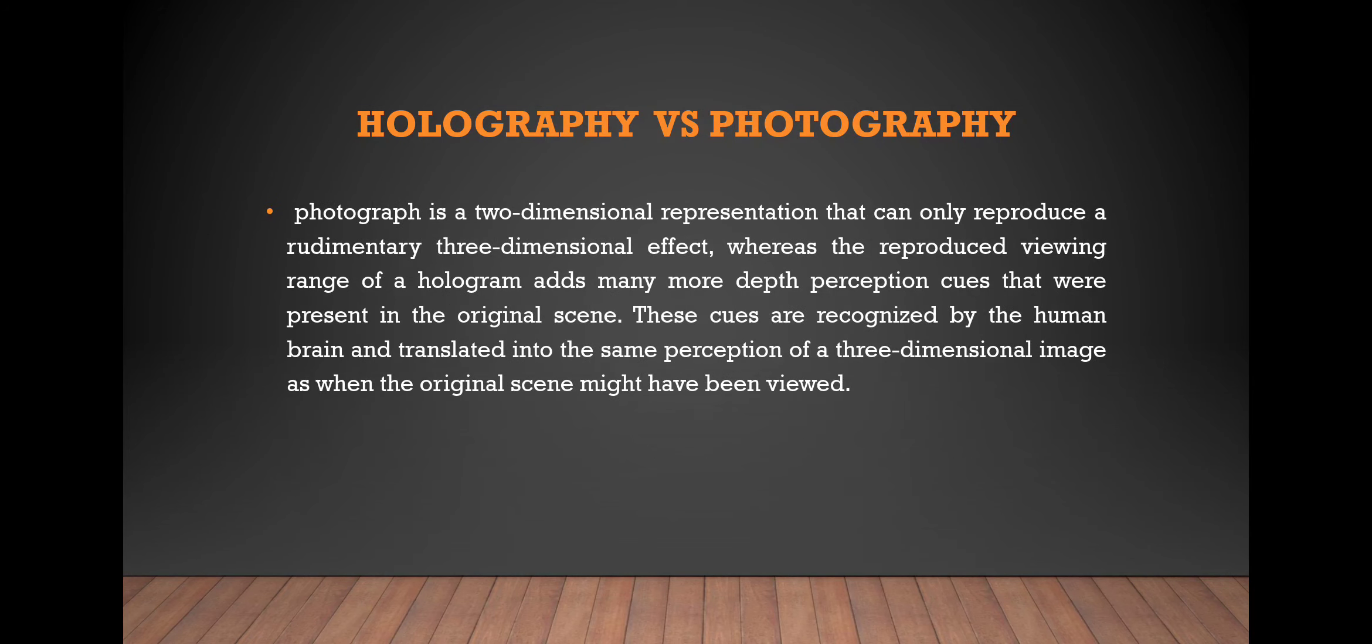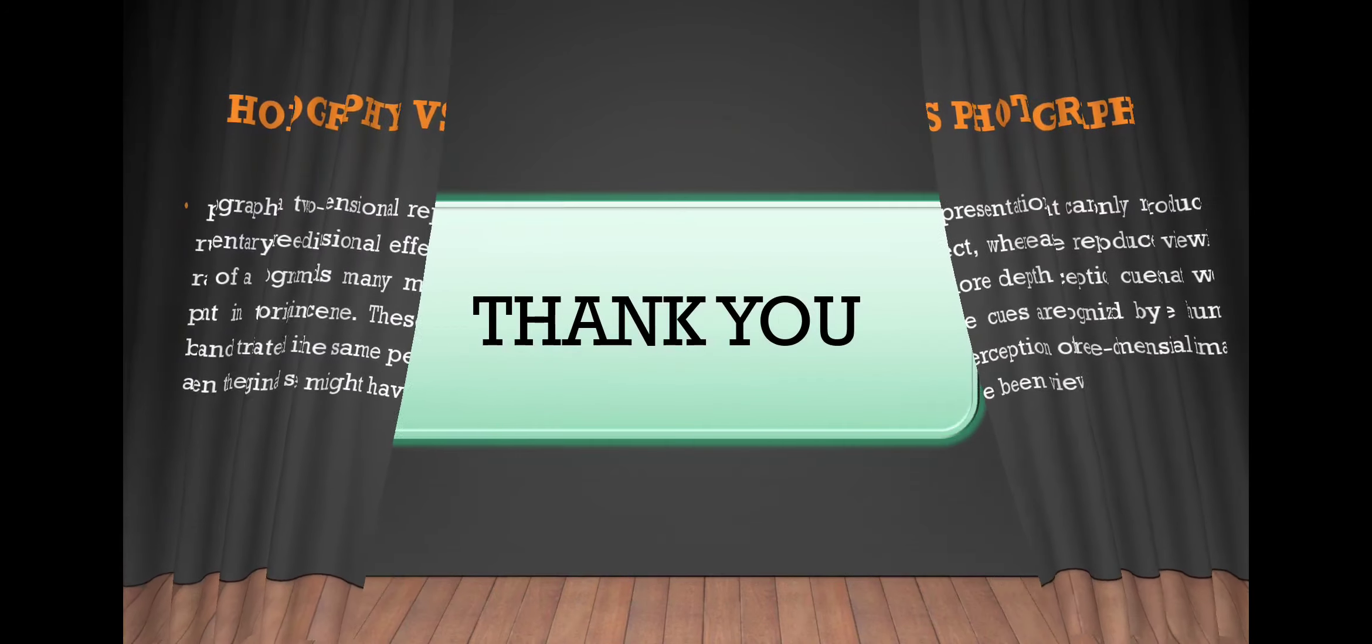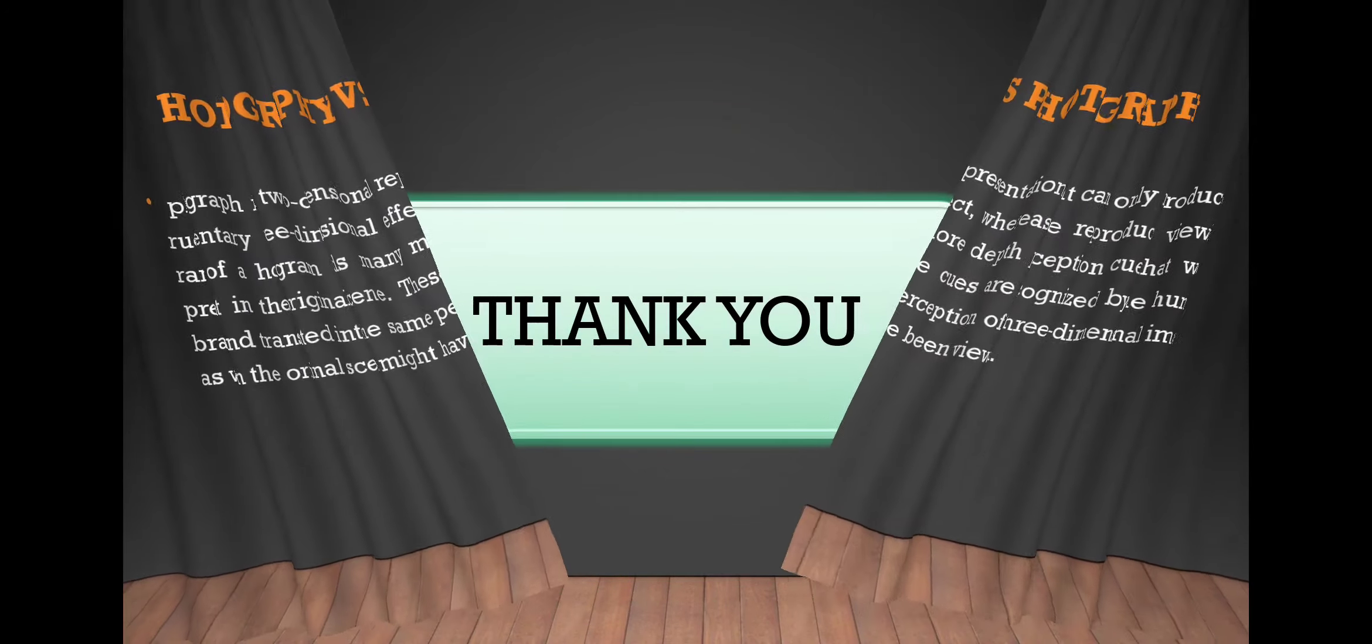A photograph is a two-dimensional representation that can only reproduce a rudimentary three-dimensional effect, whereas the reproduced viewing range of a hologram adds many more depth perception cues that are present in the original scene. These cues are recognized by the human brain and translated into the same perception of a three-dimensional image as when the original scene might have been viewed. Thank you.